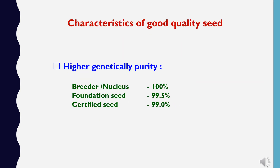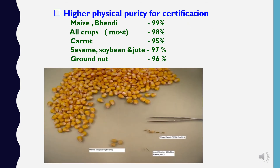The characteristics of good quality seed include: first, higher genetic purity — in the case of breeder and nucleus seeds, purity should be 100%; foundation seed should be 99.5%; and certified seed should be 99%. Second, higher physical purity for certification — for major cereals it should be 99%; for most crops it is 98%; for carrot it is 95%; for sesame, soybean, and jute it should be 97%; and for groundnuts it is 96%.